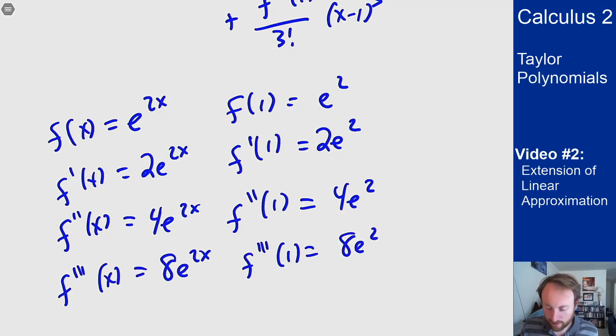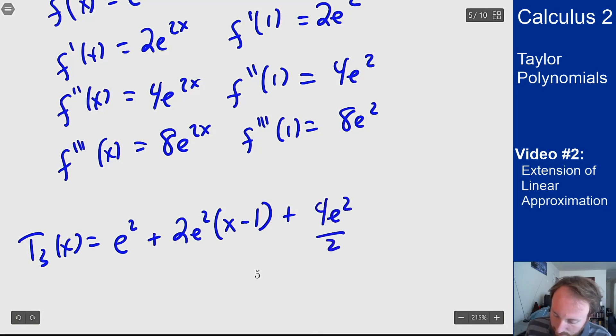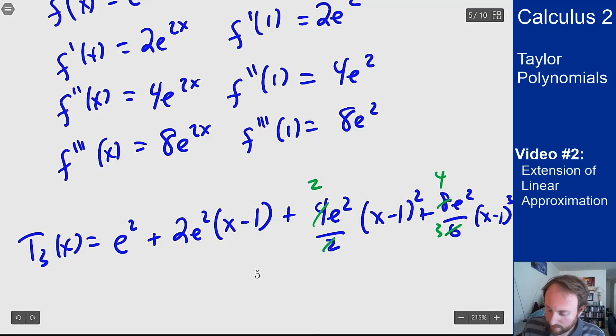With this I can write my polynomial: e^2 plus 2e^2 times (x - 1) plus 4e^2 over 2 times (x - 1)^2 plus 8e^2 over 6, because that's 3 factorial, times (x - 1)^3. You can cancel these to make this 2 and this 4/3, but that's the best you can get for your answer.